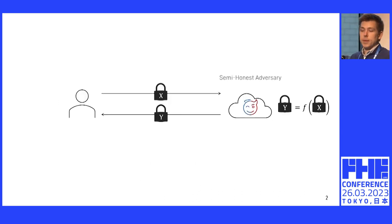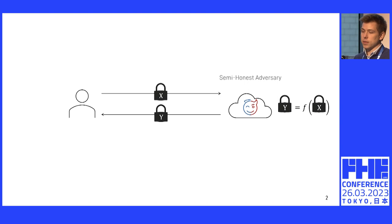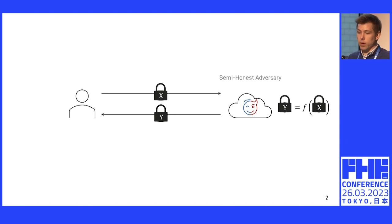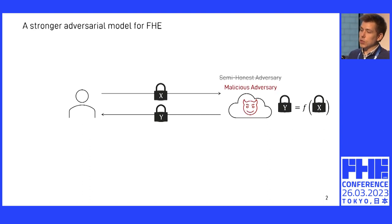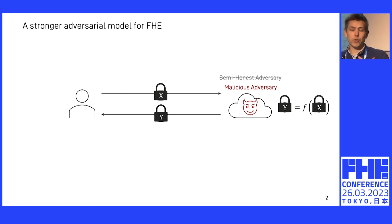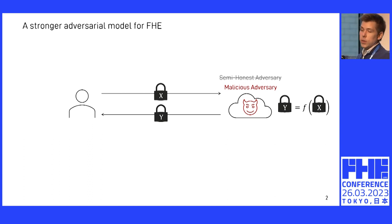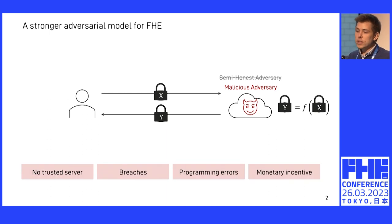I want to start by saying that in most FHE applications that we consider, we usually make the assumption that the server is semi-honest or honest-but-curious. However, in many use cases, especially in real-world applications, it's desirable and actually quite important to consider a malicious server — a server that's allowed to arbitrarily deviate from the computation. There's a lot of reasoning behind this: you might not be able to include a trusted server in your threat modeling.